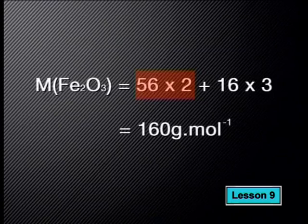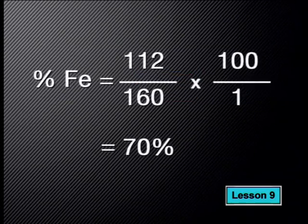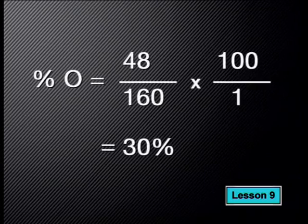Next, we work out the percentage that each element contributes to the total mass. To find the percentage of iron, we take the relative atomic mass of iron, 56, multiply it by 2, divide by the molar mass of iron 3 oxide, and multiply by 100 to get 70%. Because there are only two elements, you could subtract from 100 to get the percentage of oxygen, but it's best to calculate it the same way. The answer for oxygen is also 30%. No matter how many elemental components a compound has, all the percentages must add up to 100 — use this as a check.